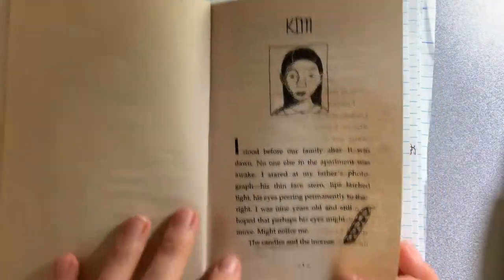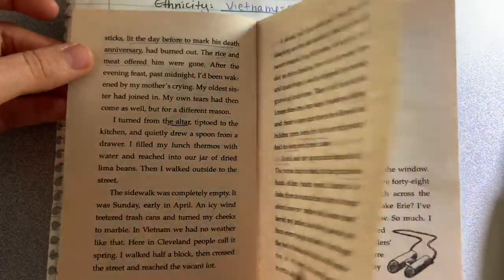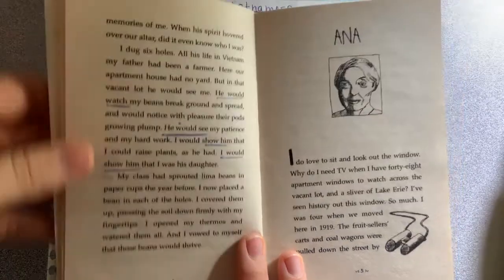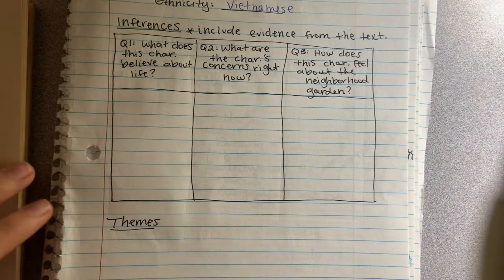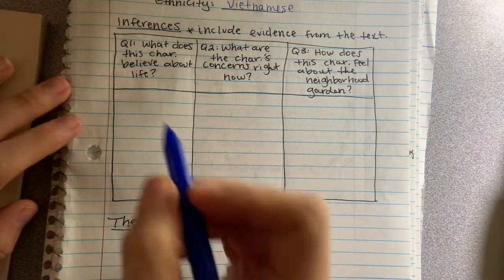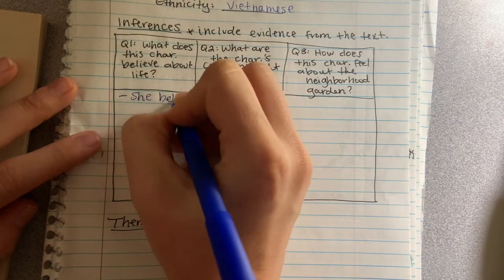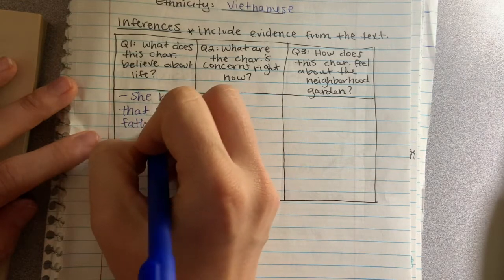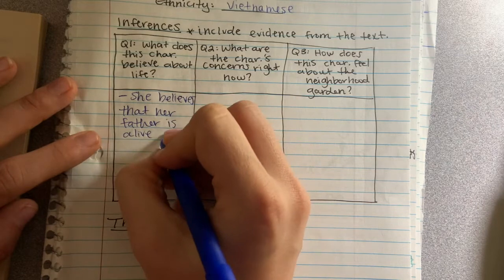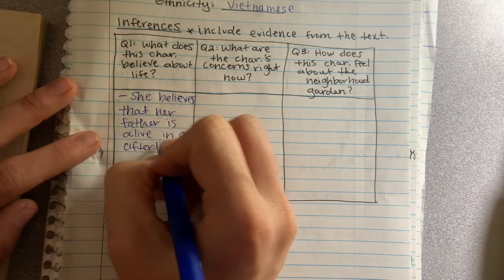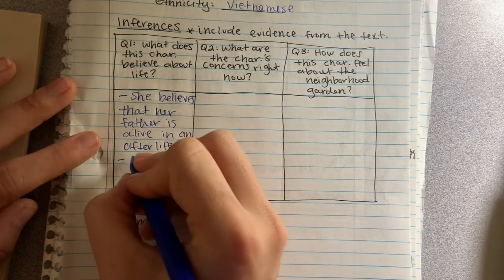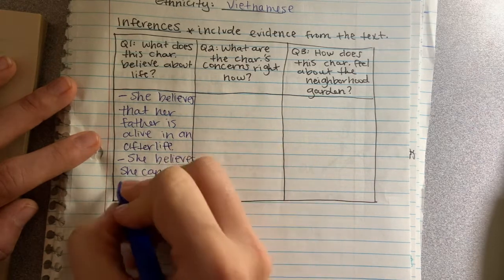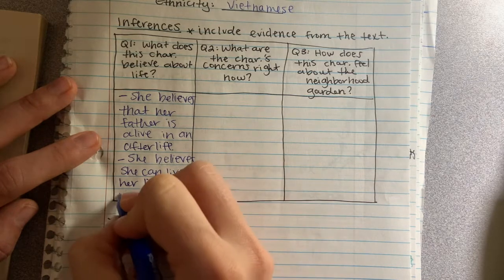All of those details — the candle and the incense, the altar that they've made for their father marking his death anniversary, and then this idea that he can still see her and that she's showing him that she can raise plants — all of that, to me, based on my background knowledge about life and what other people believe in, I can infer that she believes that her father is alive in an afterlife. And I can also infer that she believes she can live her life to make him proud.